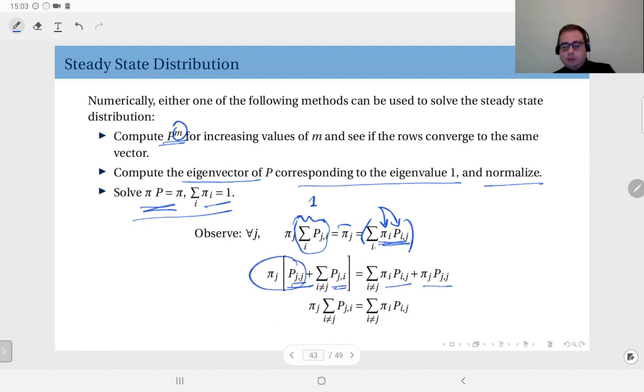Now on the left hand side you have the same product here, πⱼpⱼⱼ, which cancels out. What is left is πⱼ times the sum of pⱼᵢ's where i and j are different.